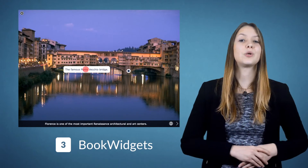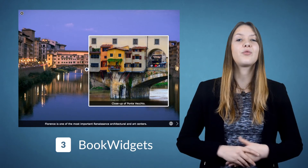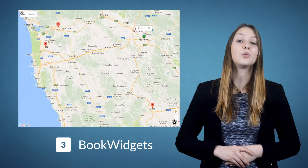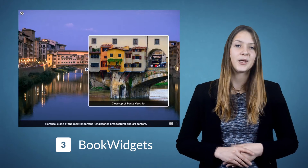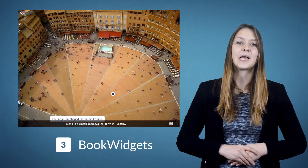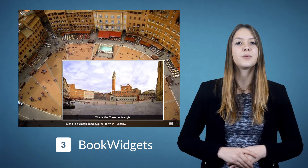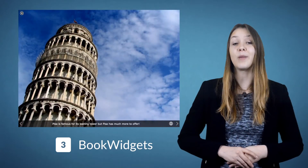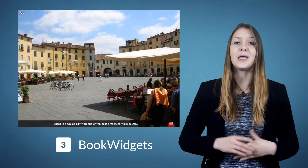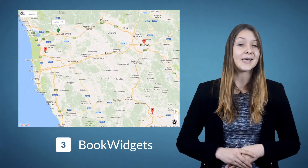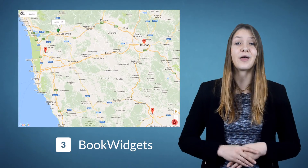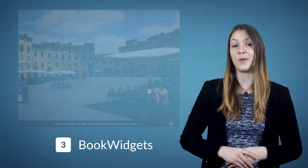If you teach geography, give the Image Carousel widget a try. It's an image slideshow with hotspots and a Google Maps twist, letting you see the exact location of every image on the map.